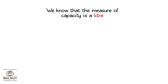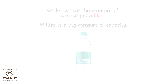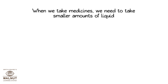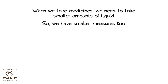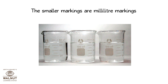We know that the measure of capacity is a litre. A litre is a big measure of capacity. When we take medicines we need to take smaller amounts of liquid, so we have smaller measures too. Have you seen a measuring glass? The smaller markings are millilitre markings. A millilitre is a smaller unit.